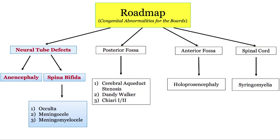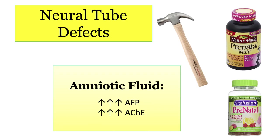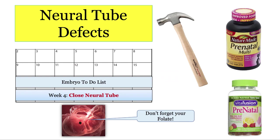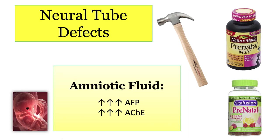We'll start off with the neural tube. The NBME would like to beat into your brain that prenatal vitamins are a big deal, and they'll use neural tube defects as their hammer. Remember that the neural tube normally closes in the fourth week of development, and a folate deficiency will lead to neural tube defects. In the amniotic fluid, you will see increases in alpha-fetoprotein and acetylcholinesterase, since they leak out of the patent neural tube.